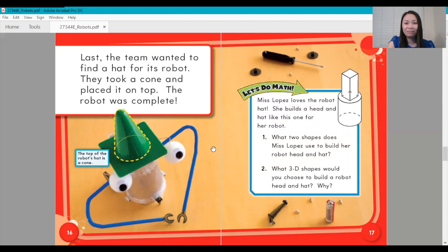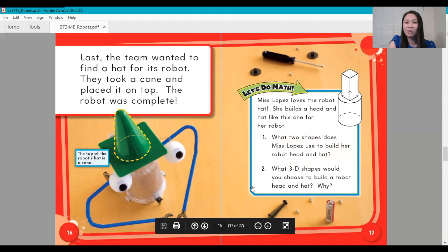Let's do some more math. Miss Lopez loves a robot hat. She builds a head and hat like this one for her robot. What two shapes does Miss Lopez use to build her robot head and hat? Did you guess rectangular prism and cylinder? You're right. Number two: what 3D shapes would you choose to build a robot head and hat, and why? Go ahead and share your answers with your classmates or your teacher or your parents.